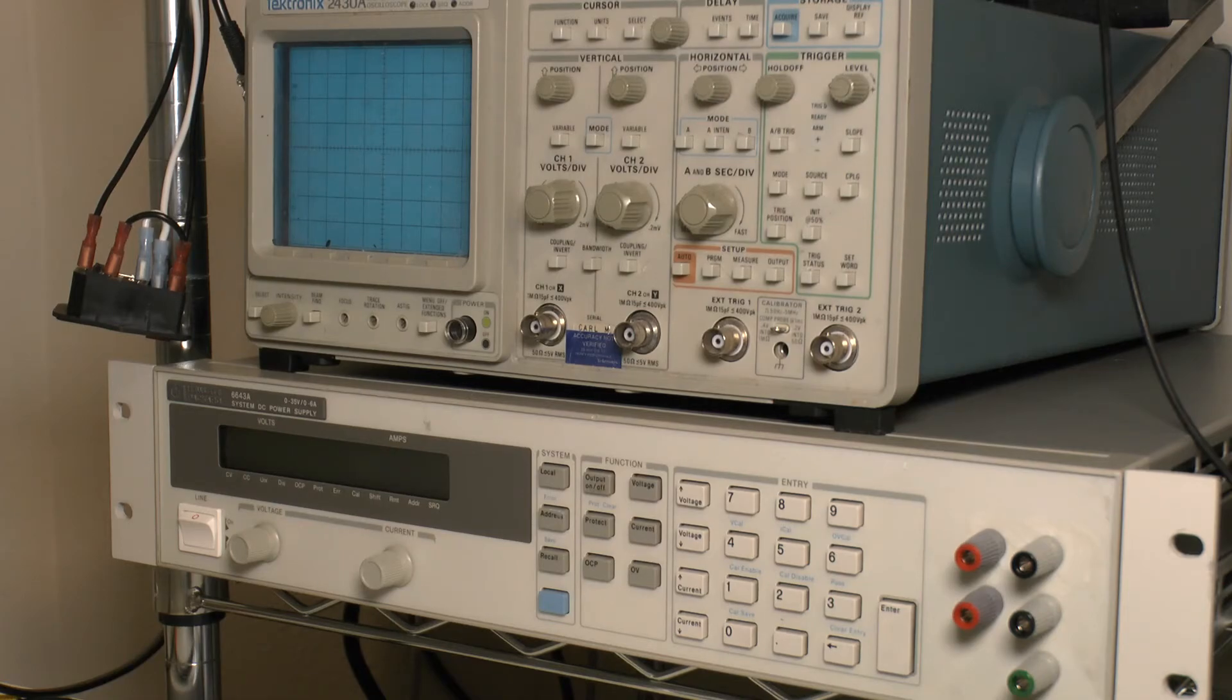So there it is in my little bread rack underneath my TEC 2430A. And honestly, if you weren't told it was modified, I don't think you could tell really. I mean, it looks really clean. I really like the way that looks.